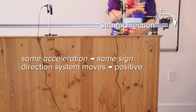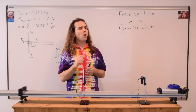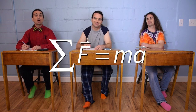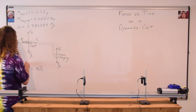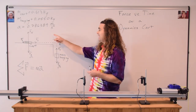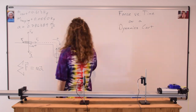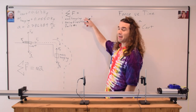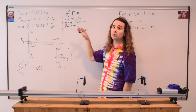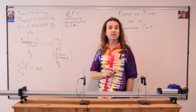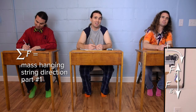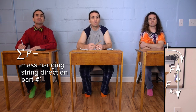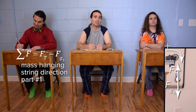Now we are going to use Newton's second law. Newton's second law states that net force equals mass times acceleration, where both force and acceleration are vectors. Let's sum the forces on the hanging mass in the positive direction during part one. The force of tension is positive because it's up, and the force of gravity is negative because it's down.